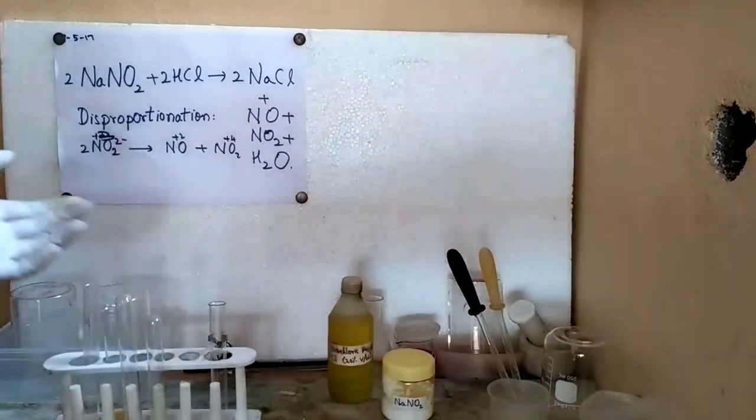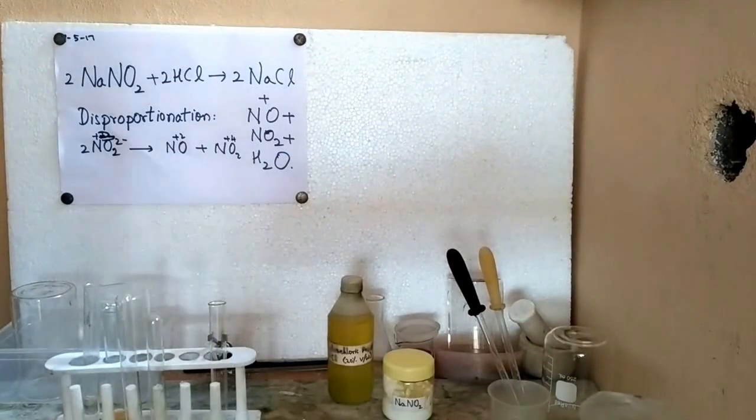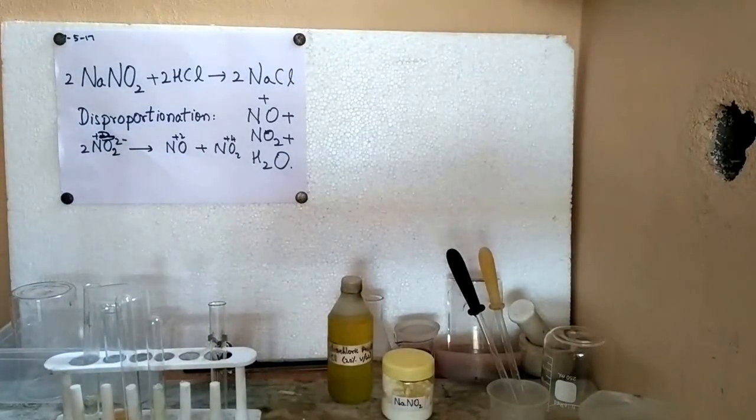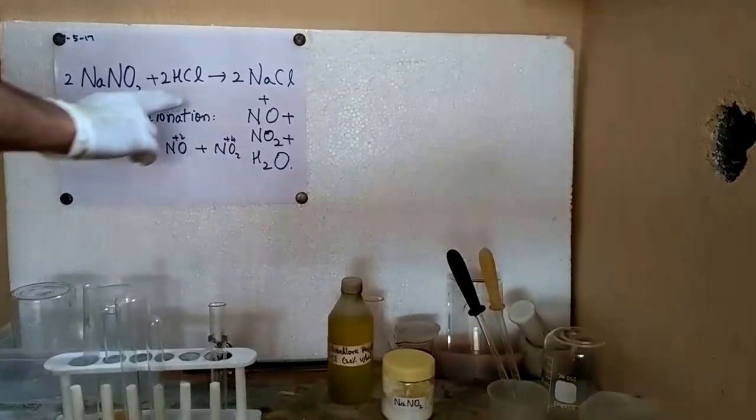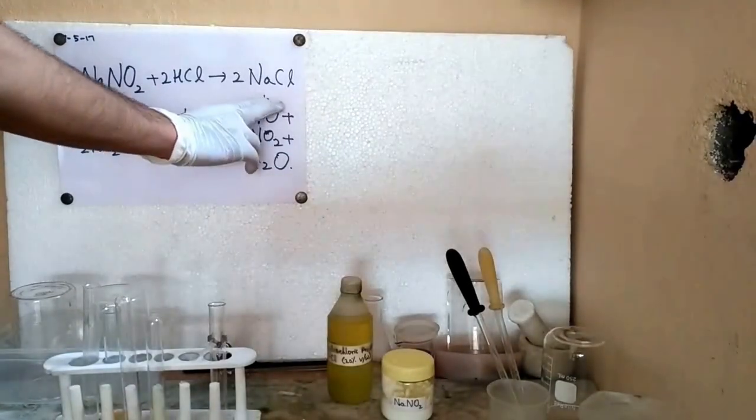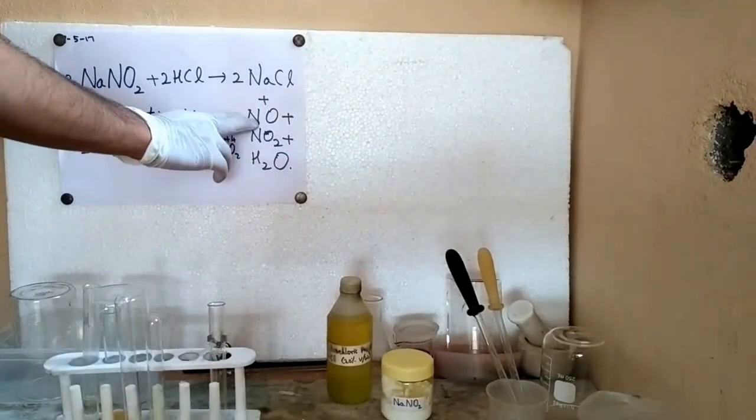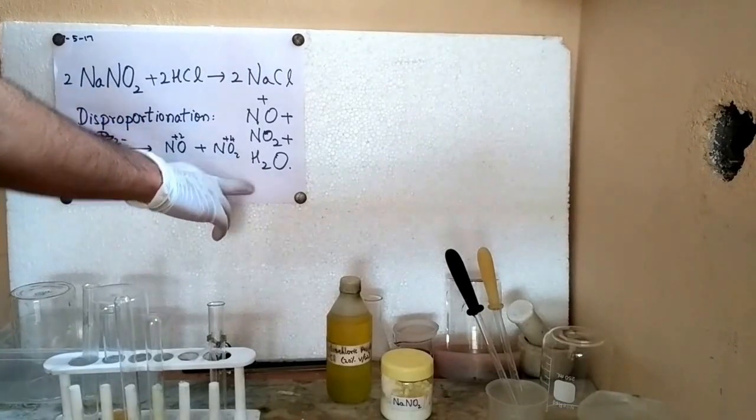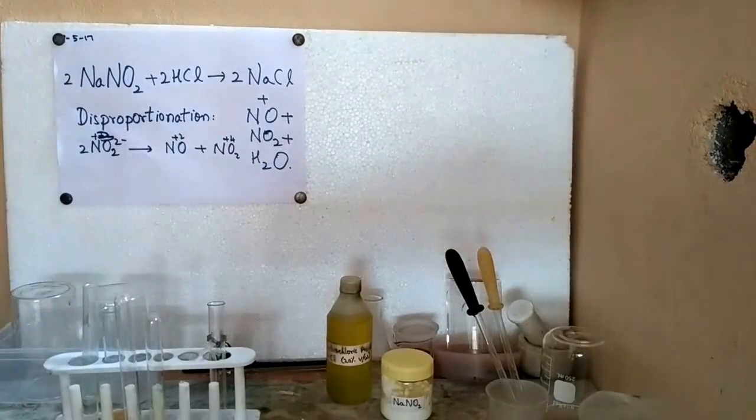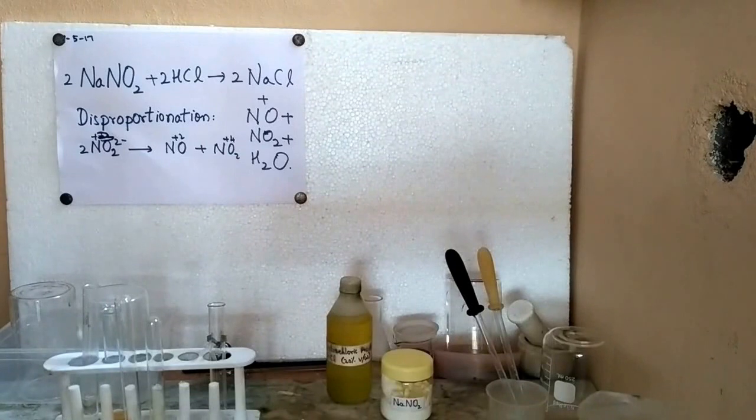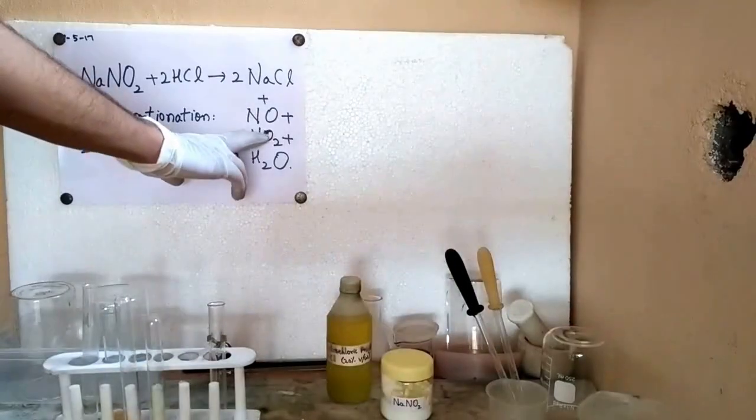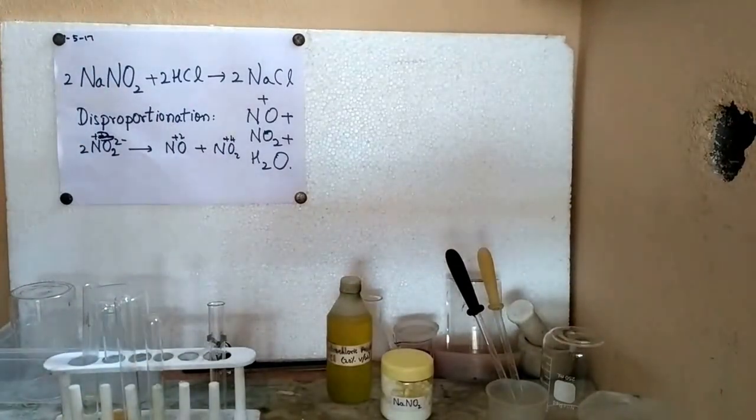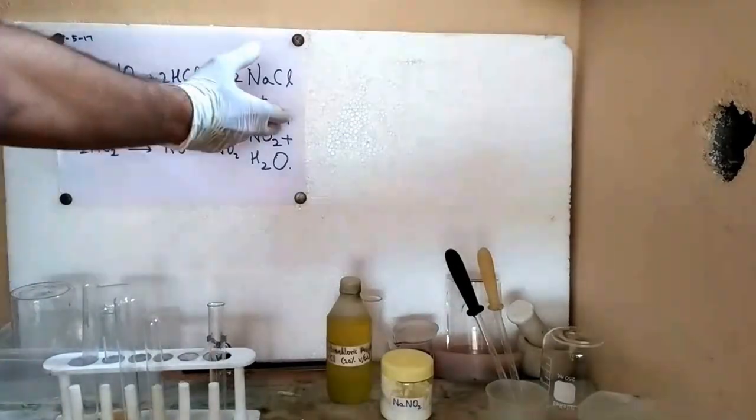And some test tubes and a spatula. So all that would be happening in this reaction is sodium nitrite would react with hydrochloric acid to give us sodium chloride, nitrogen monoxide, and nitrogen dioxide, and some water. Nitrogen dioxide is a reddish brown colored gas and nitrogen monoxide is a colorless gas. You can't notice the evolution of nitrogen monoxide because it is a colorless gas.